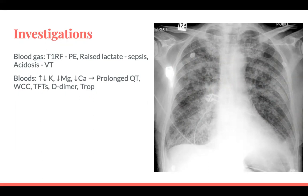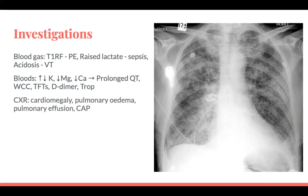White cell count for sepsis, TFTs looking for hyperthyroid, D-dimers for PE, and troponin for a recent MI. On chest X-ray, look for cardiomegaly, pulmonary oedema, and signs of heart failure: pulmonary vein dilatation, upper lobe diversion, air bronchograms, airspace opacification — that's fluid within the alveoli — giving that diffuse opacification picture. Blunted costophrenic angles may indicate pleural effusions.